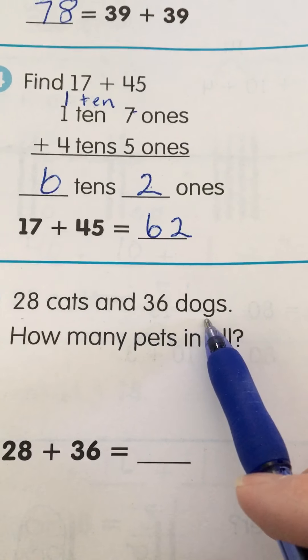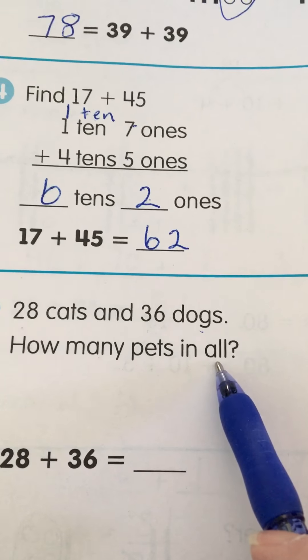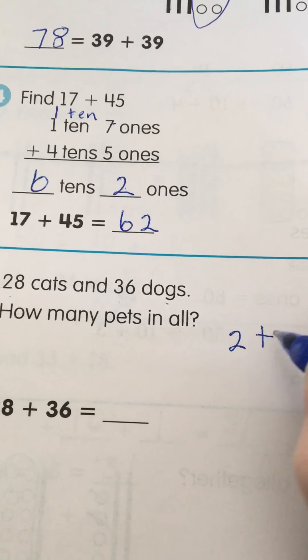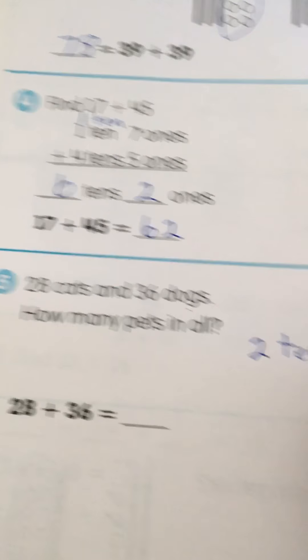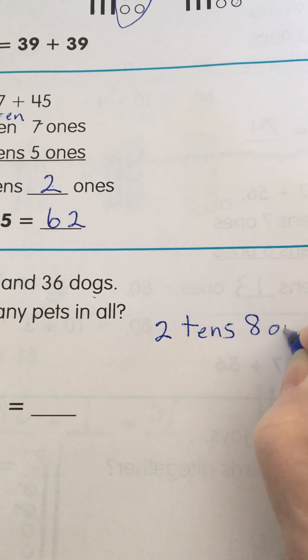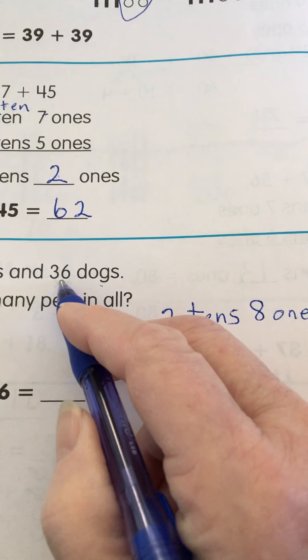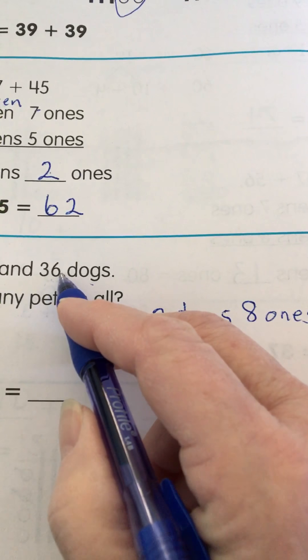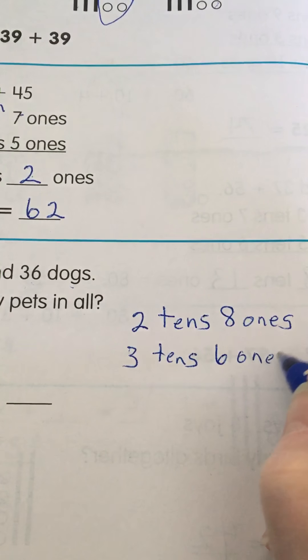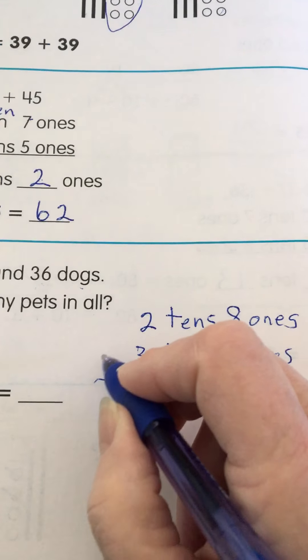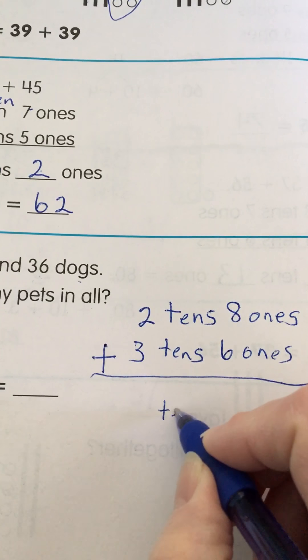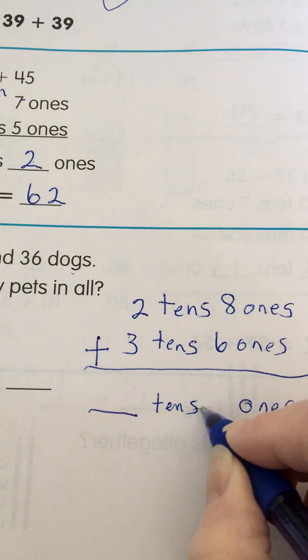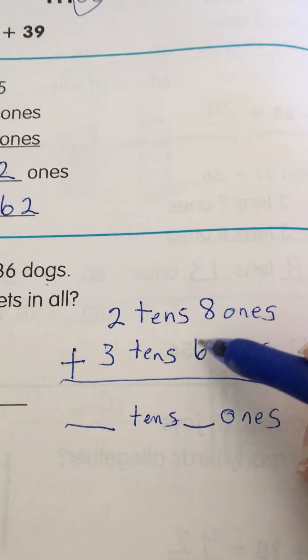Twenty-eight cats and thirty-six dogs. How many pets in all? Okay. I'm going to say two tens. Two tens. And eight ones. And then I'm going to put three tens. And six ones. Draw my line. I'm going to add them up. So I'm going to say how many tens. How many ones. And let's add. Eight plus six.